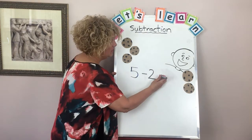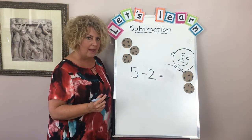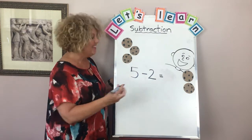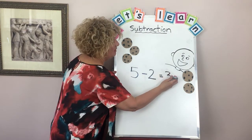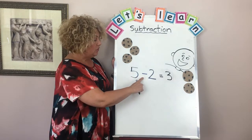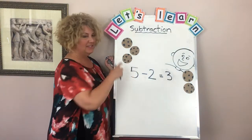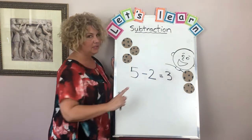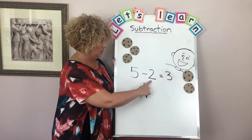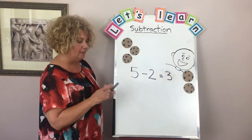Five cookies to start with and then Mr. Visconti took away two cookies. What I'm wondering is how many cookies are left over now at the end? Did you say three? We have three cookies left. We started with five cookies, took away two cookies, and were left with three cookies at the end. Can you read this number sentence with me? Five minus two equals three. Great job!